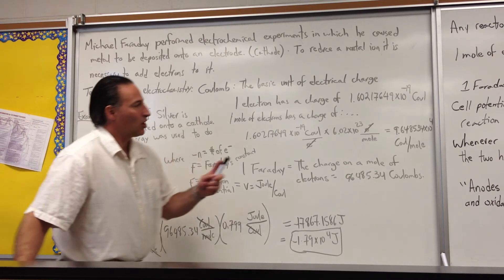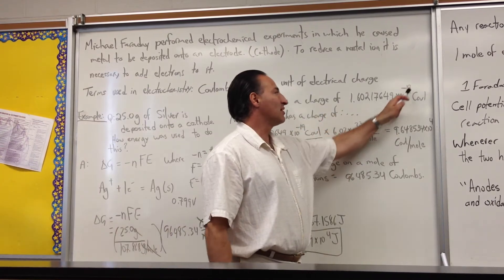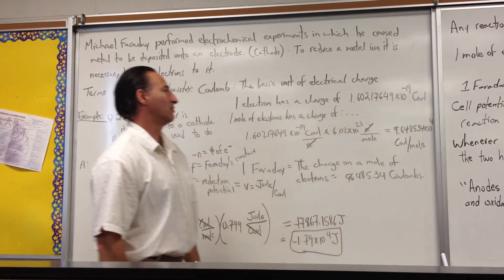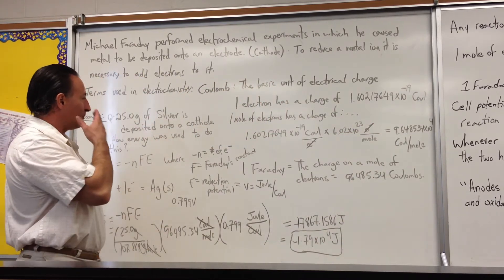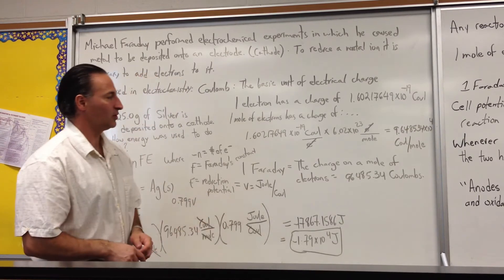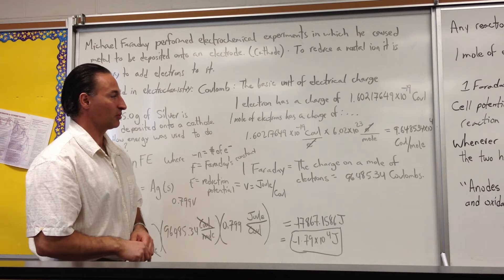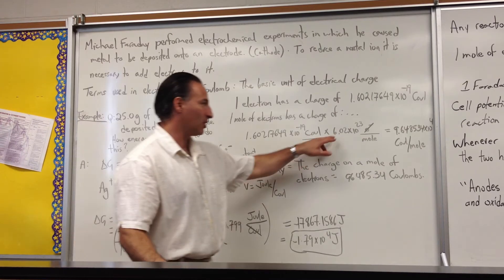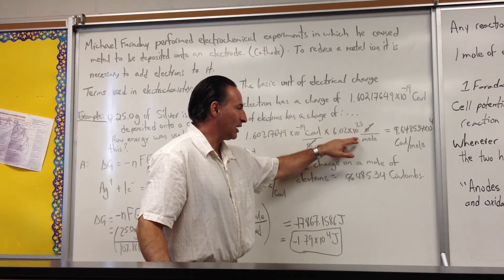One electron has a charge of 1.6 times 10 to the minus 19 Coulombs. If you take a mole of electrons, which is a standard unit of measurement when dealing with atoms, that's 6.02 times 10 to the 23 electrons.